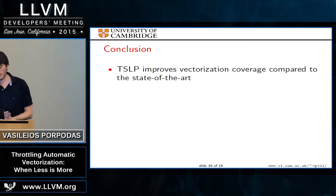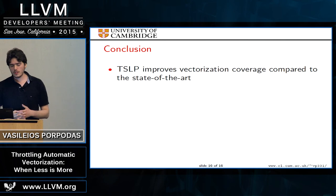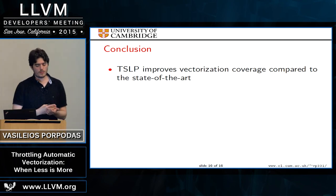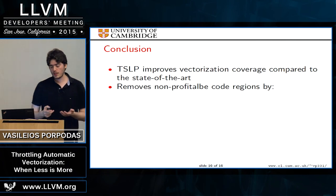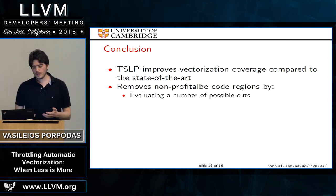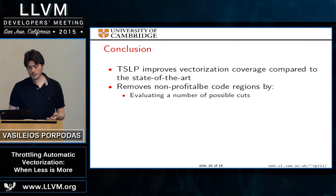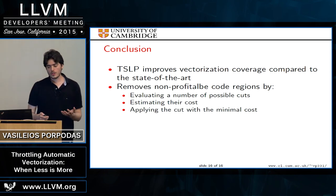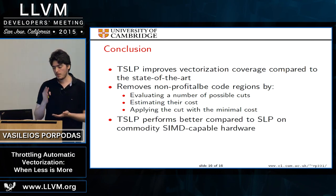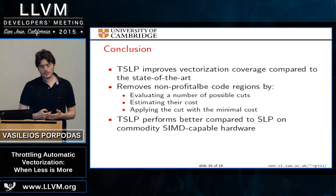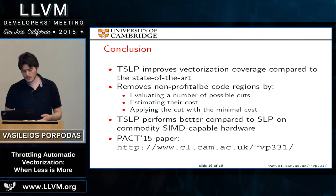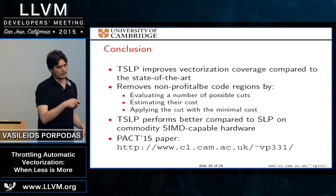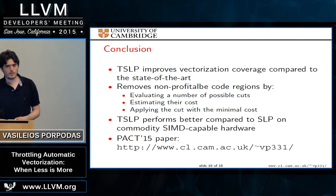In conclusion, TSLP is an improved automatic vectorization approach based on SLP that reduces the region that gets vectorized. It removes non-profitable code from the vectorized region by evaluating possible cuts on the SLP graph, estimating the cost, and applying the cut with minimal cost. TSLP performs better than SLP on standard hardware. The paper is available on the speaker's personal website.